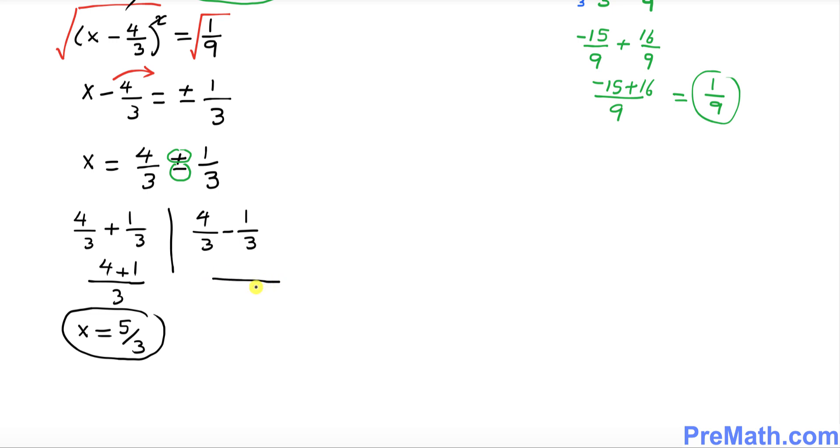Here we have again 3 common denominator, 4 minus 1 that means 3 over 3, x equals to 1, another solution. Thus our solution set turns out to be 5 over 3 comma 1 and that's our answer.